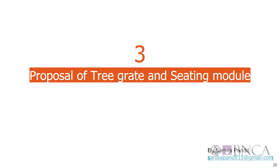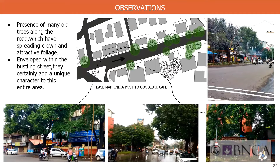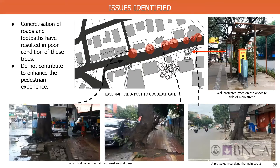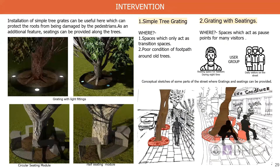Moving on to the third proposal, it is a tree grate and seating module. As seen from the images, there are many old trees along this road. Involved within the bustling street, they certainly add a unique character to this entire area. But concretization of routes and footpaths has resulted in poor condition of these trees, and they do not contribute to enhancing the pedestrian experience. Thus, installation of simple tree grates can be useful to protect the roots from being damaged. Additional features like seating and lights can also be provided with it.